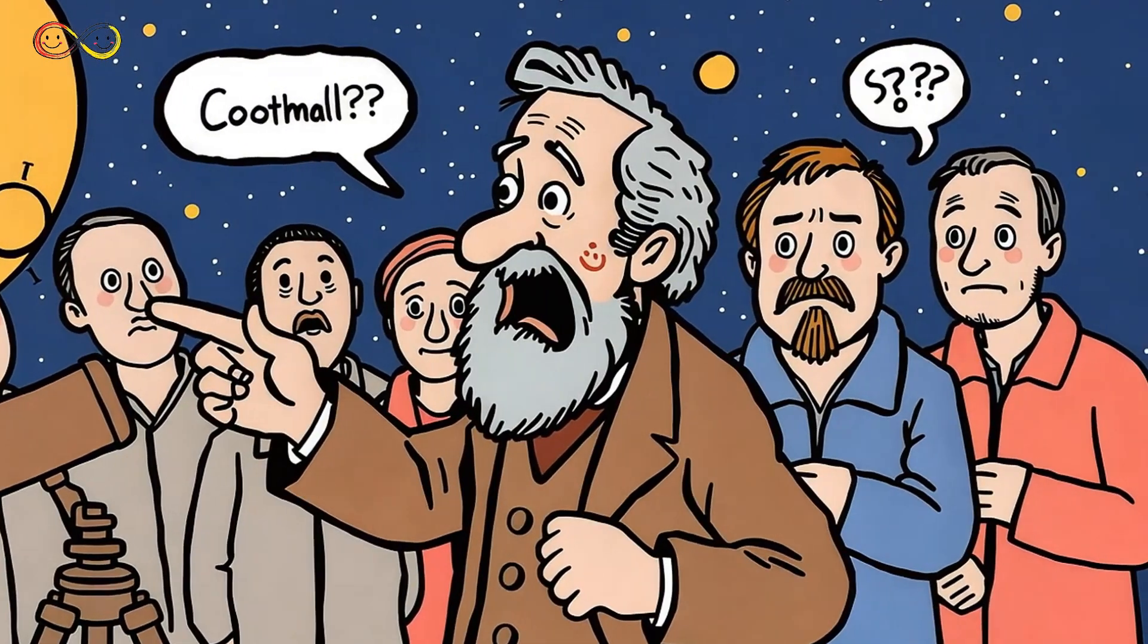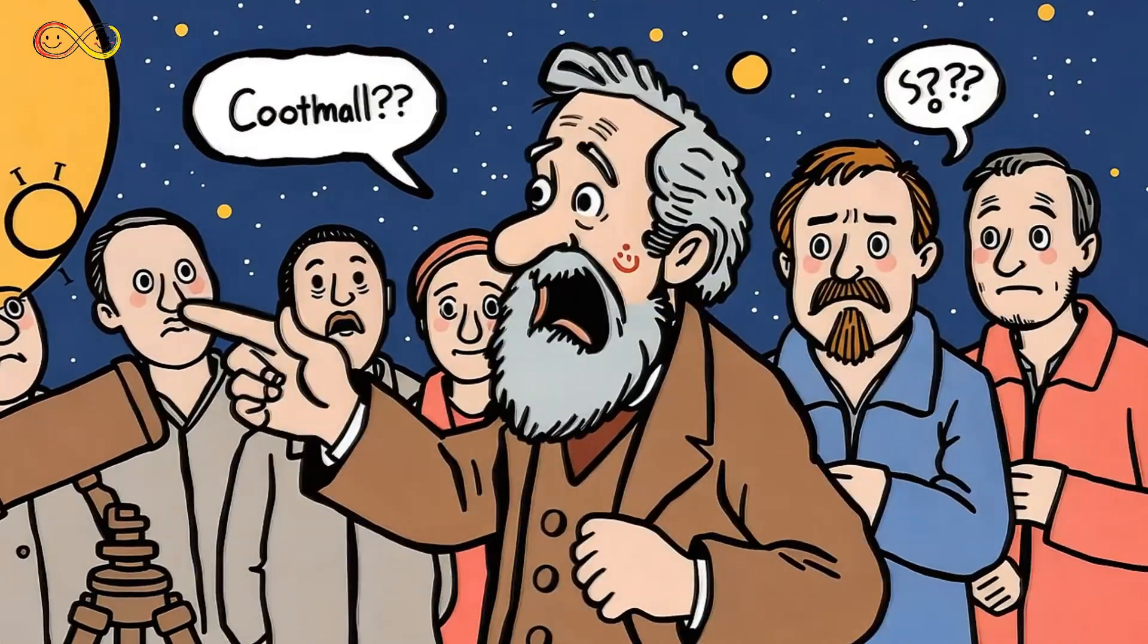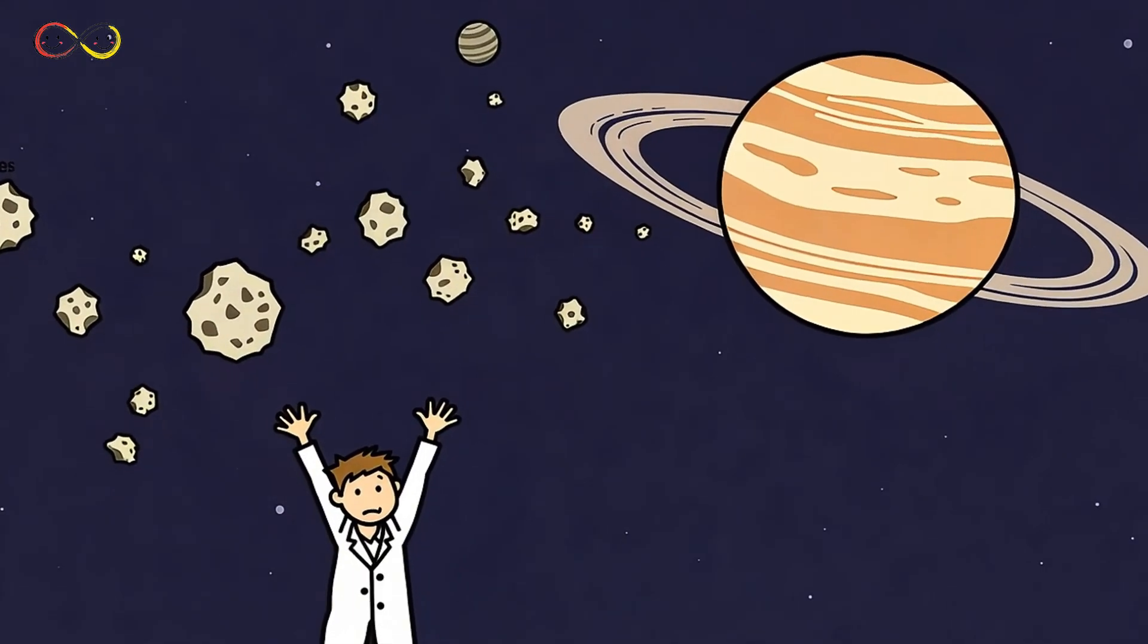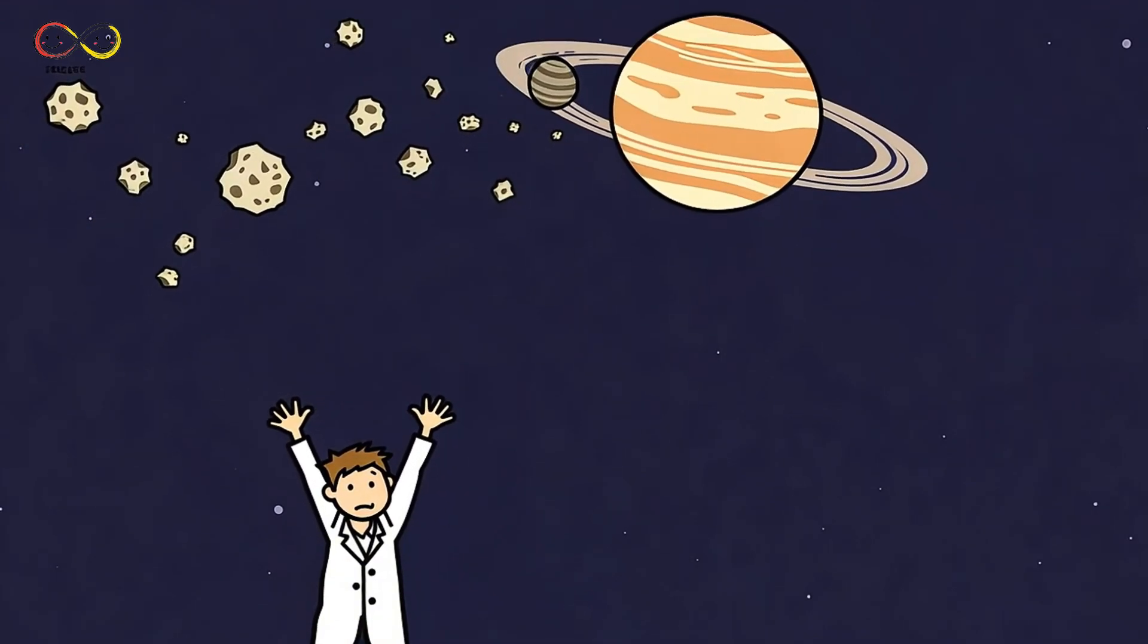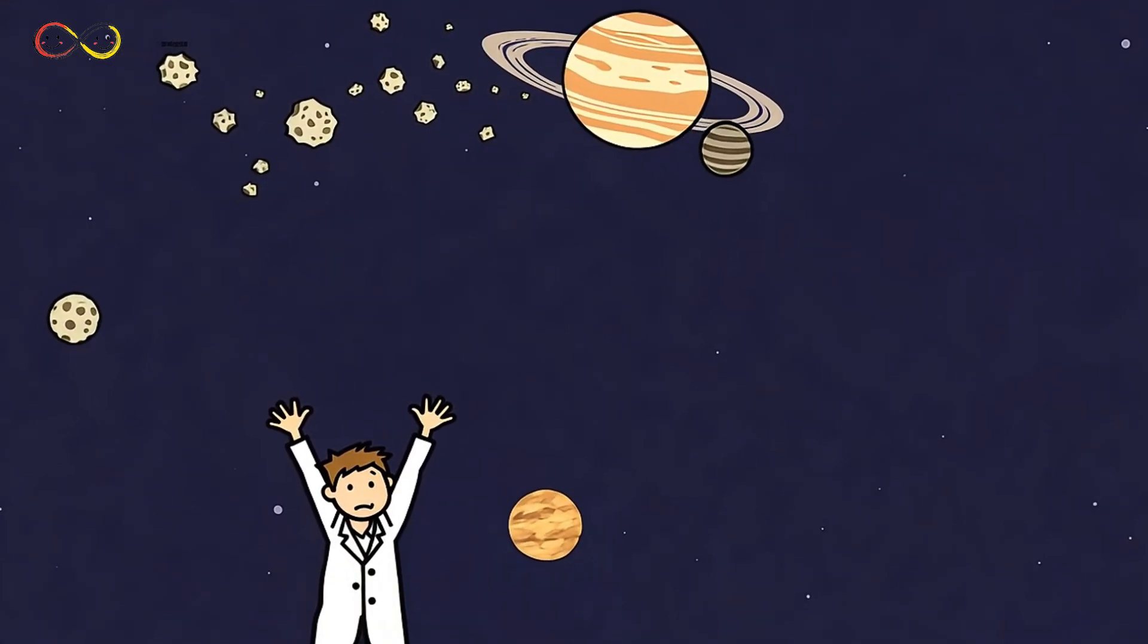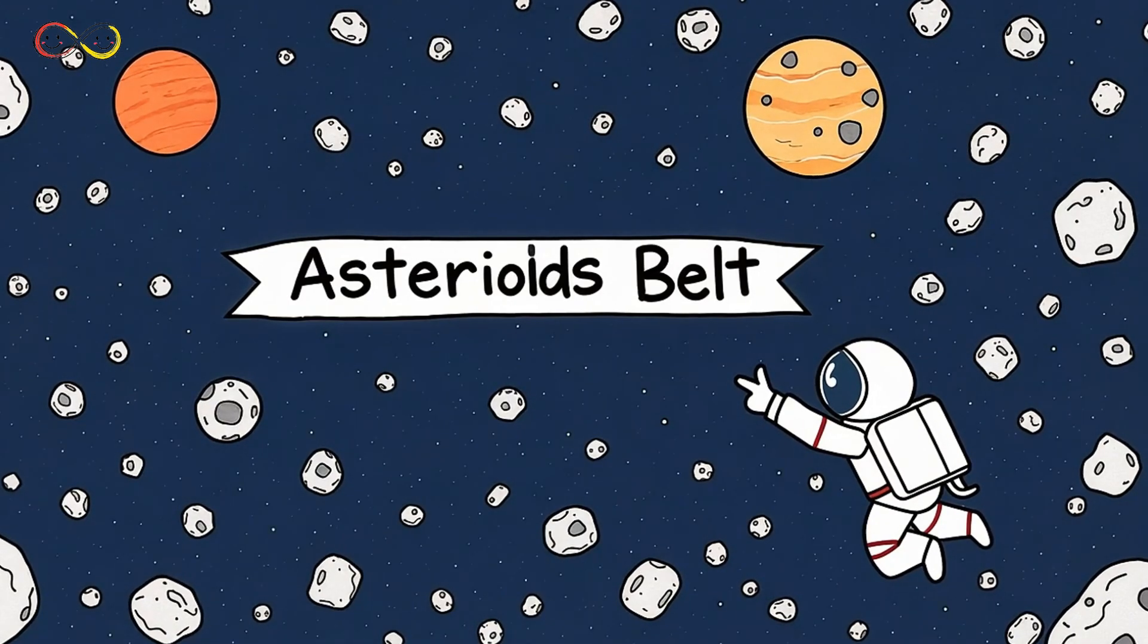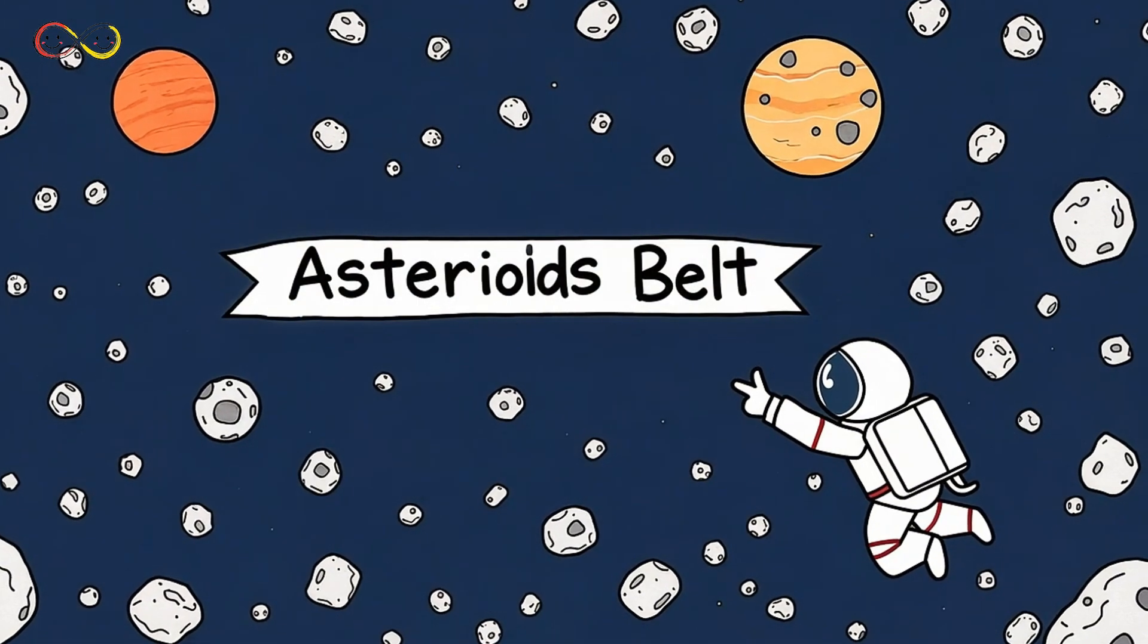Then, in 1801, astronomer Giuseppe Piazzi finally found something. It wasn't a giant planet like they had hoped, but a tiny round object. He named it Ceres. Scientists were excited, but there was a problem. Ceres was much too small to be the missing planet. Soon, more of these tiny objects were found. One, two, three, then hundreds. But instead of a big missing planet, there was just a bunch of small rocky objects floating in space. Scientists started calling them asteroids.